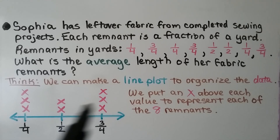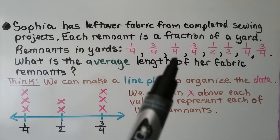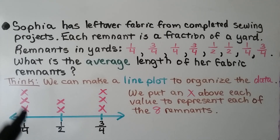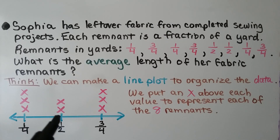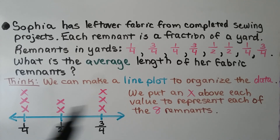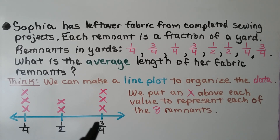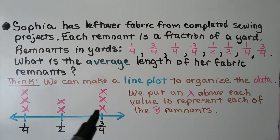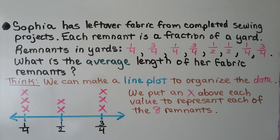We have one-fourth — there are one, two, three of those, so we put three marks above the one-fourth. For one-half, we have one, two of them. And for three-fourths, we have one, two, three of them, so we put three marks. We put an X above each value to represent each of the eight remnants.